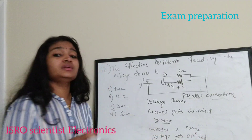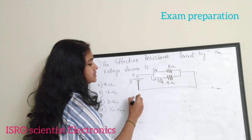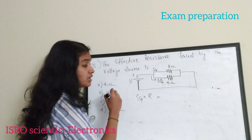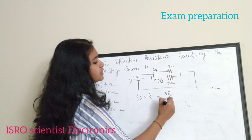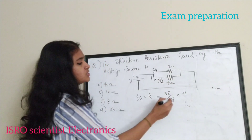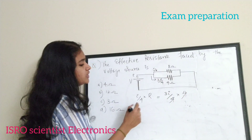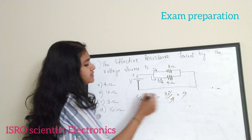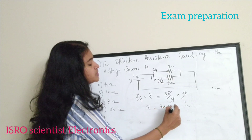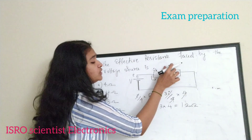Using Ohm's law, the voltage across the first branch is (i/4) × R, and for the second branch it is (3i/4) × 4. Since the voltages are equal in parallel, we equate them: (i/4) × R = (3i/4) × 4. Cancelling i and 4 on both sides gives R = 3 × 4 = 12 ohm.